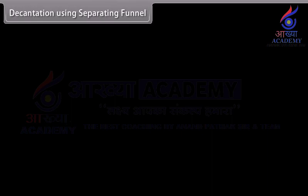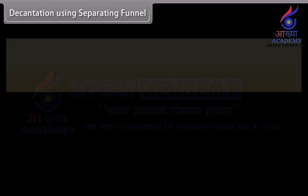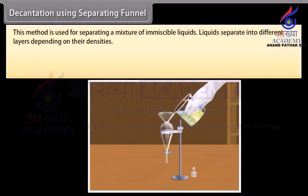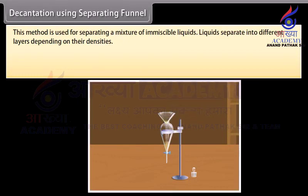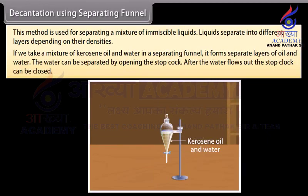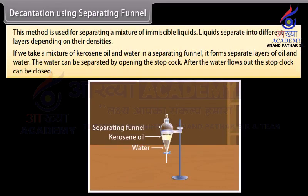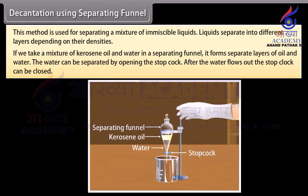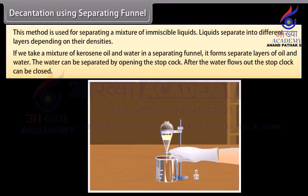Decantation using a separating funnel. This method is used for separating a mixture of immiscible liquids. Liquids separate into different layers depending on their densities. If we take a mixture of kerosene oil and water in a separating funnel, it forms separate layers of oil and water. The water can be separated by opening the stopcock, and after the water flows out, the stopcock can be closed.